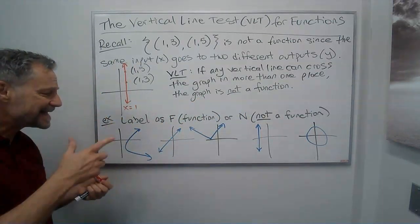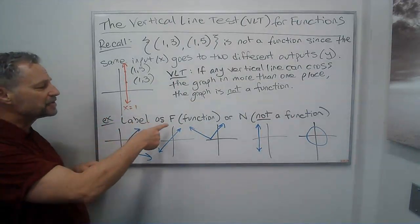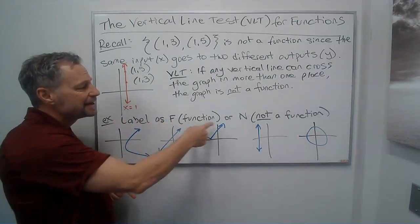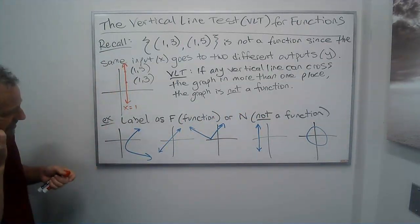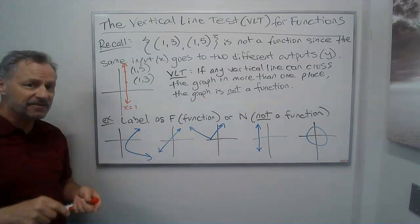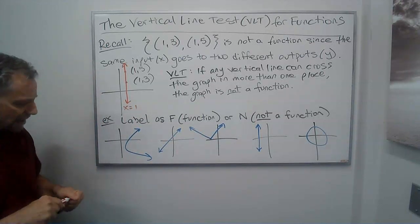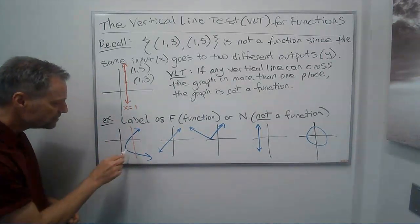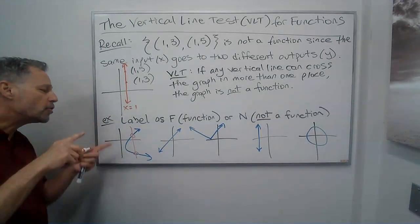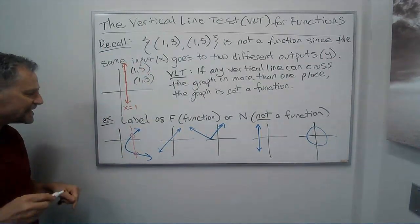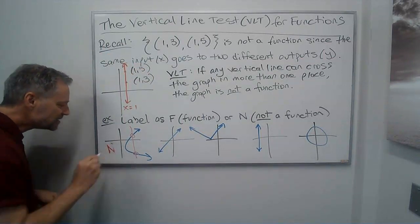Let's look at some examples. I'm going to label them: F means it's a function, N means it's not a function. For the first one, we ask: can I find a vertical line that crosses in more than one place? Yeah, here's one that crosses in two places. It fails the vertical line test. This is not a function.